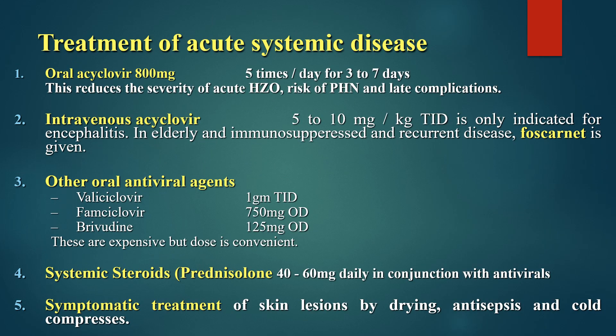The treatment of acute systemic disease is oral acyclovir 800 mg five times a day for three to seven days. This reduces the severity of acute herpes zoster ophthalmicus, the risk of post-herpetic neuralgia, and late complications. Intravenous acyclovir 5 to 10 mg per kg three times a day is only indicated for encephalitis in elderly and immunosuppressed patients and for recurrent disease. Foscarnet is also used in recurrent disease.